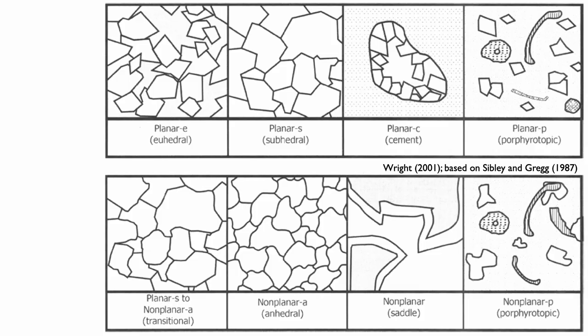Now let's look at the non-planar dolomite. You can have a case where you essentially have a subhedral to non-planar dolomite, known as planar S to non-planar A, or a transitional dolomite. Then you can have a true anhedral dolomite where you can see the grains of dolomite, but they are all rounded and you don't really see the mineral planes — that is a non-planar A, for anhedral dolomite.